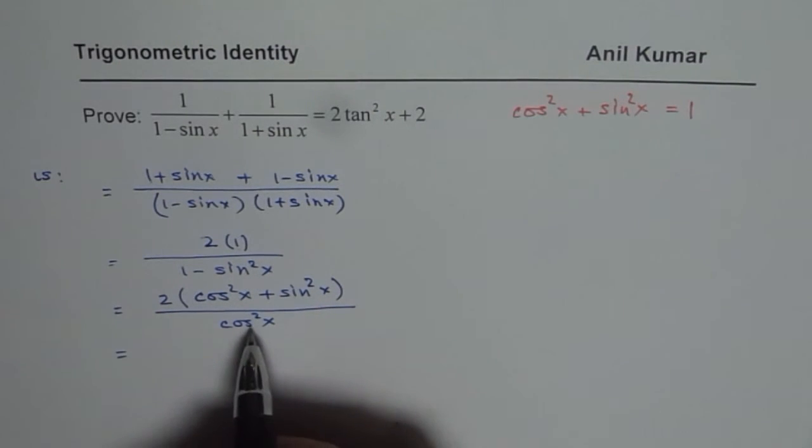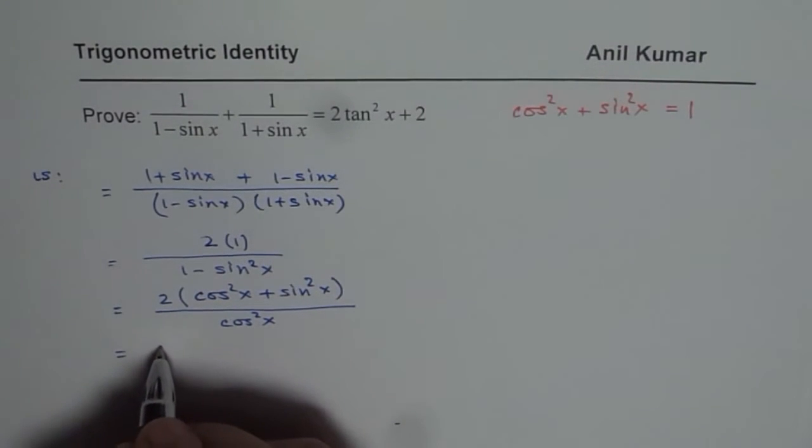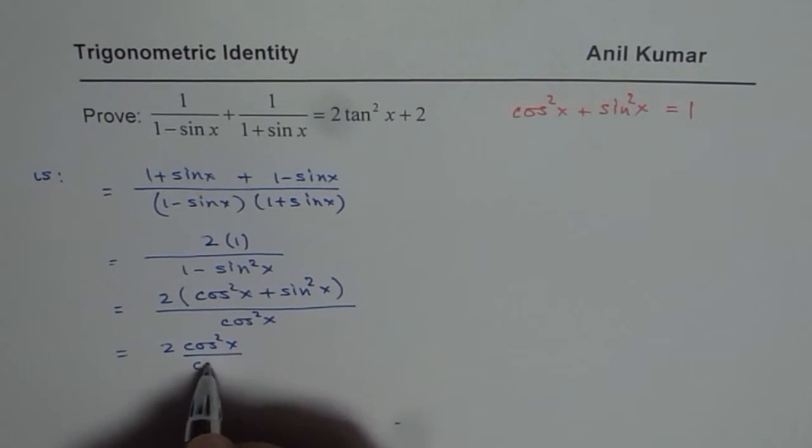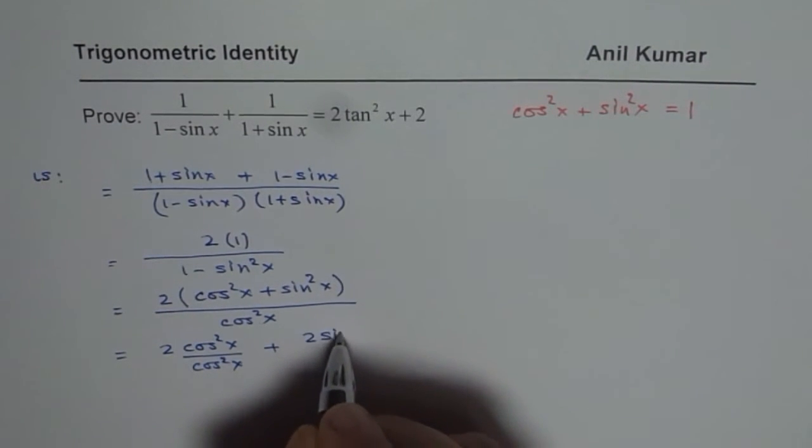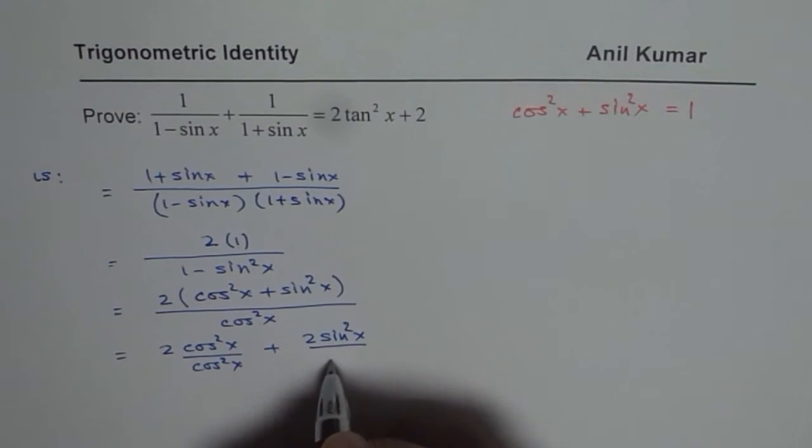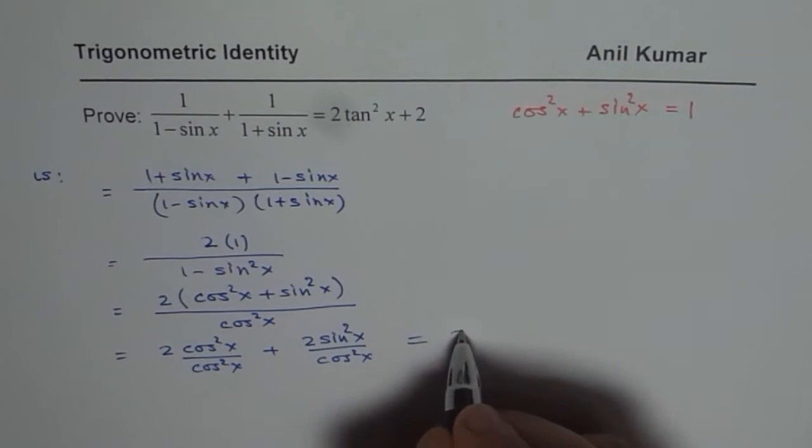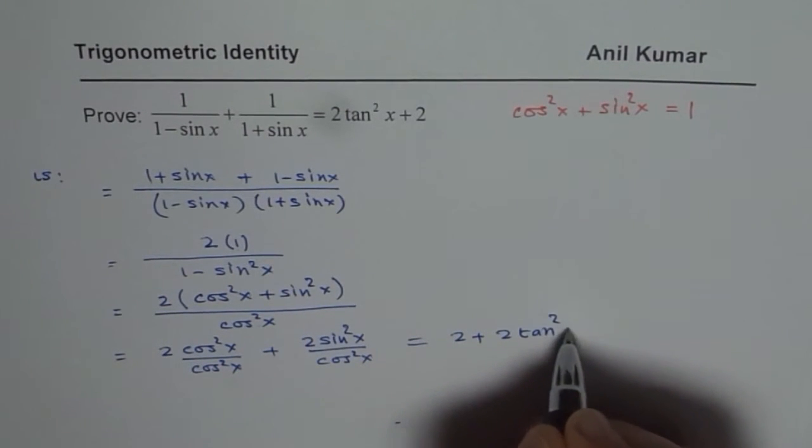Now you can see, we can divide each term by cos square x. So we have 2 times cos square x divided by cos square x plus 2 times sin square x divided by cos square x. And this gives us 2 plus 2 tan square x.